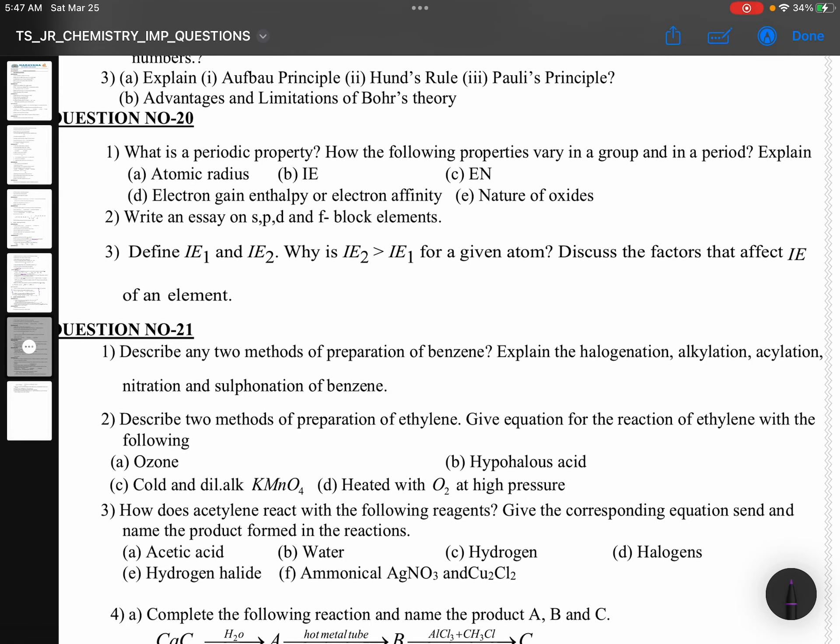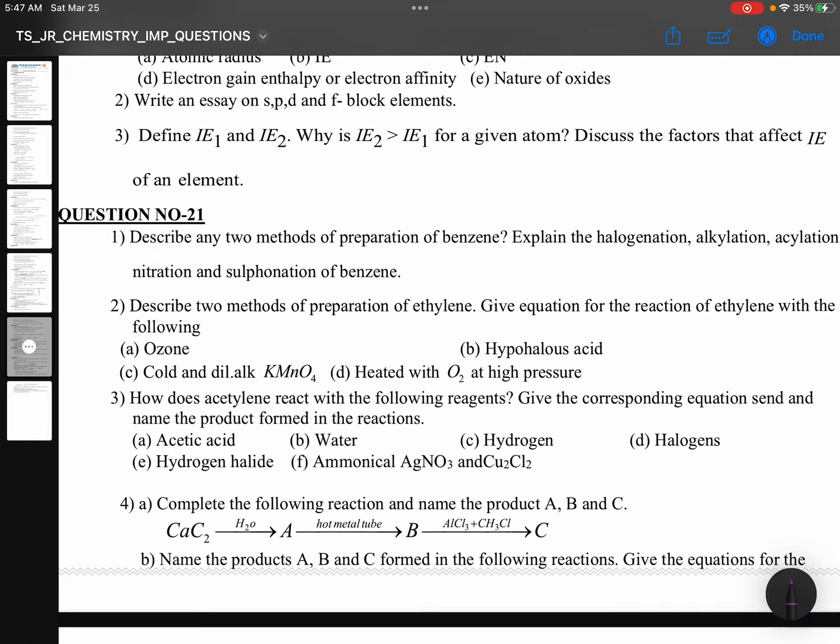Question number 20: Periodic property. How do some properties change in a group and period: radius, ionization energy, electronegativity, electron gain enthalpy, nature of oxides. s and p block elements. And why second IP greater than first IP. IP1, IP2, definitions, factors affecting. Interesting. Twenty-first question is interesting. If you are strong in organic chemistry, don't leave this question.